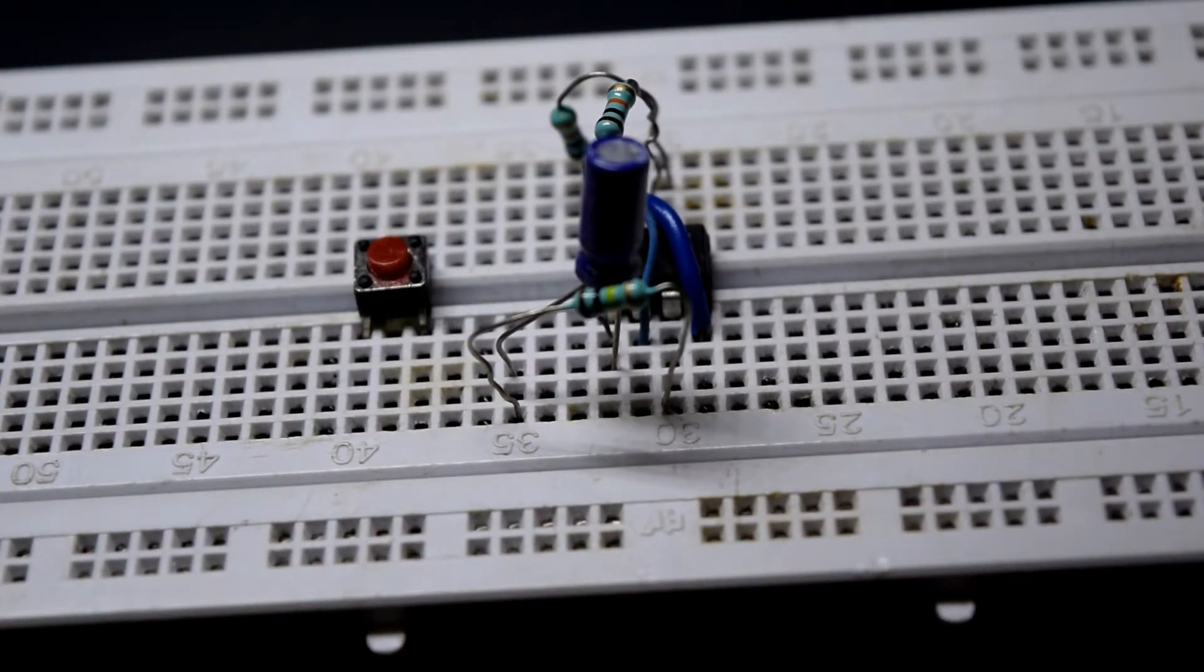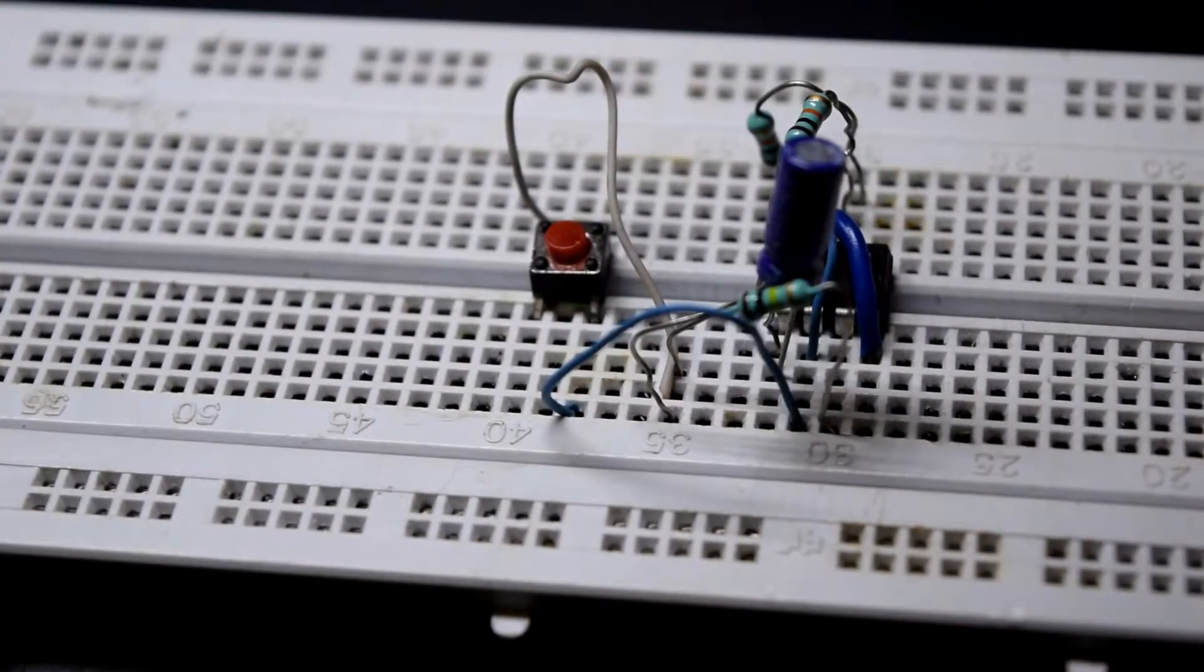This is the time to insert the push-button switch on the breadboard. The next step is to connect one terminal of the push-button to pin 2 of the IC and the other terminal to positive terminal of the capacitor.